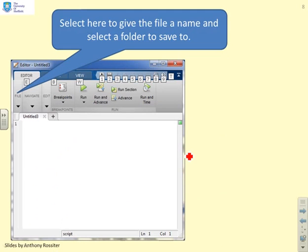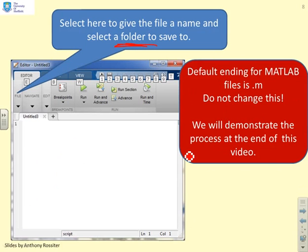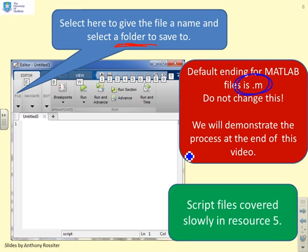What you should always do when you've opened up a file is immediately save it somewhere. Give it a name and specify a folder where you're going to save it, and then there's no danger of you losing your work. Note that the default ending for MATLAB files is .m. Don't change this because that's how MATLAB knows it's a MATLAB file. We'll talk about script files much more in resource 5.